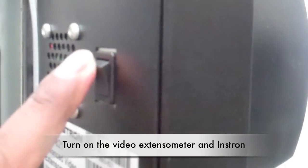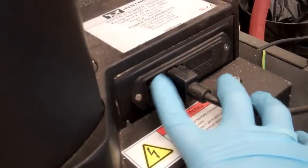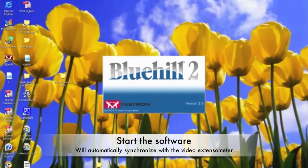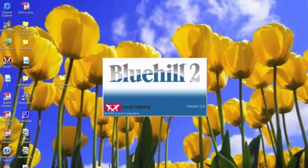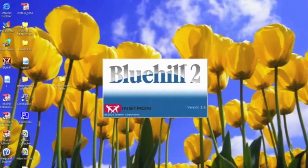Turn on the video extensometer and the INSTRON machine switches. Then open up the BlueHill software. The software will automatically synchronize with the video extensometer. If any communication errors appear, restart the software and check the connection of the video extensometer.